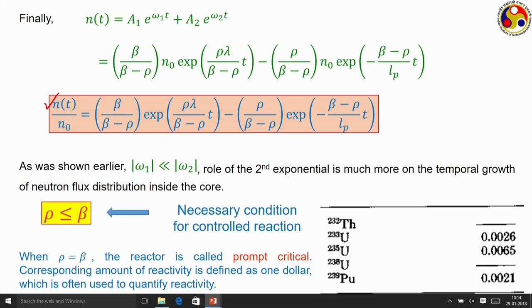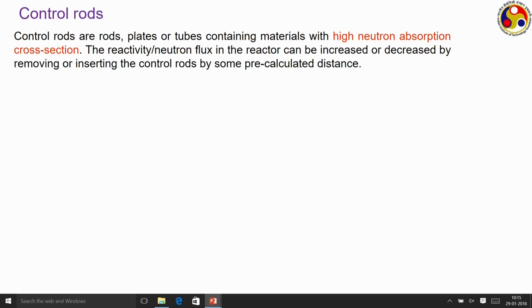With this we have discussed the role of prompt and delayed neutrons in determining the criticality of a thermal reactor. Let us now move to the mechanisms used in practical reactors to achieve control. The most common one is control rods — elements which can be in the shape of rods, plates, or tubes containing materials with very high absorption cross section. Whenever these structures are present inside the reactor, they can absorb a significant portion of the neutrons in the neighborhood area, reducing the reactivity and neutron flux concentration.